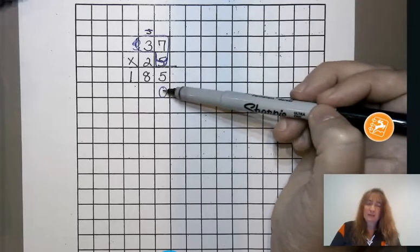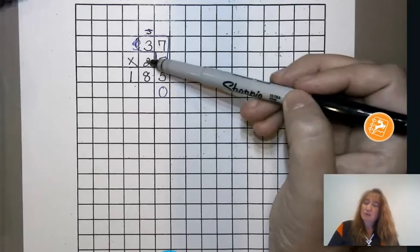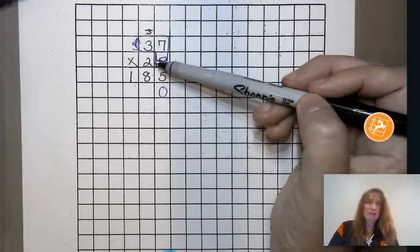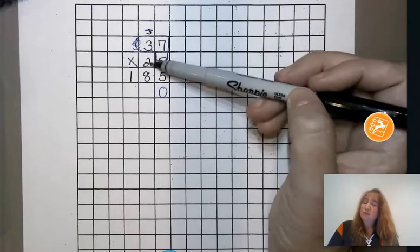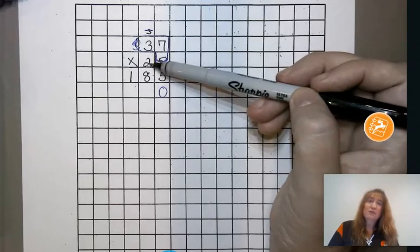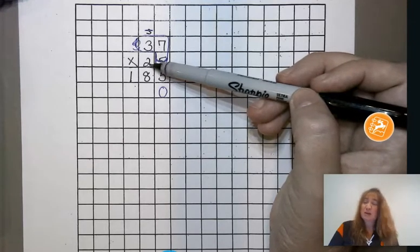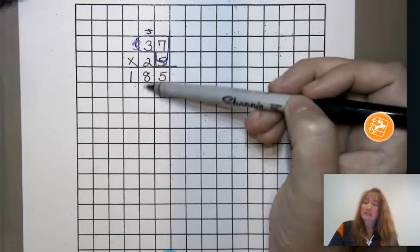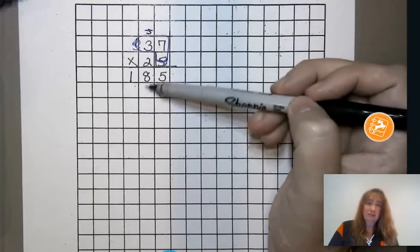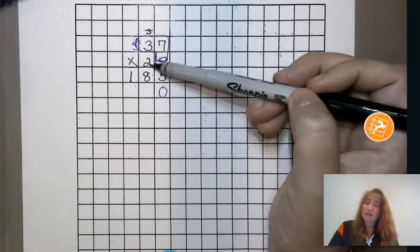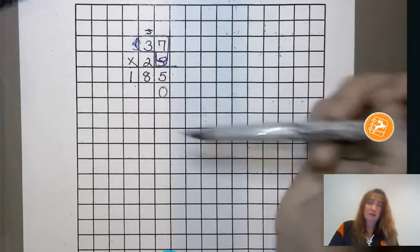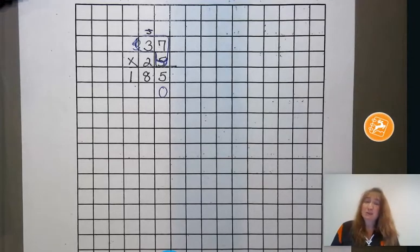She's so happy she lays an egg. Well, that helps us put our placeholder in because the next number we're going to work with is this 2. But that 2 is not worth 2, that 2 is worth 20. So when we first start multiplying by this 2, our product will have to go in the tens place. So we have put in a placeholder there so that our product goes in our tens place because it's really multiplying by 20.